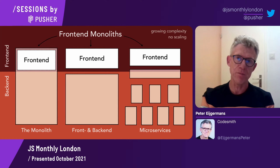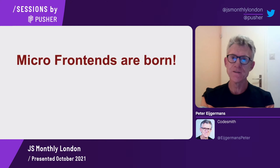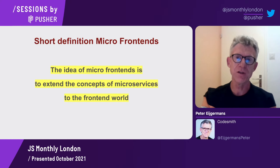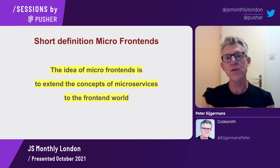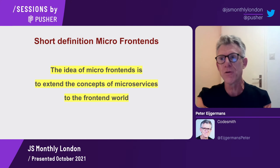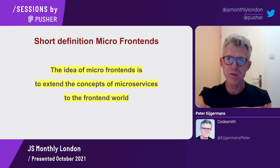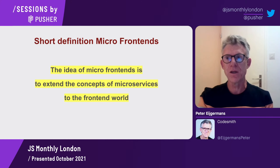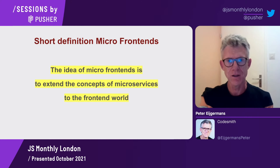That was the situation at Amazon and Netflix. They tried to split up their frontend, of course. To recap: we started with a monolith where the frontend and backends are tightly linked. We split them into separate parts, and ended up with microservices but with a large frontend monolith at the top — and that is not what we want. So the micro frontends are born.